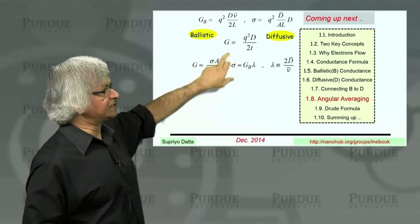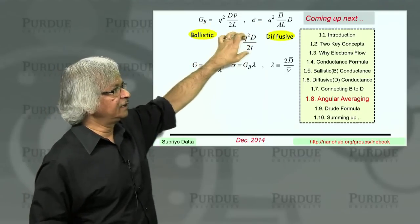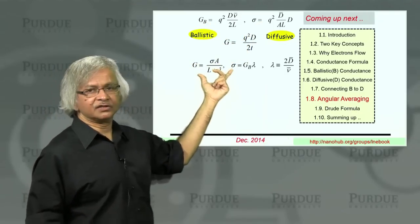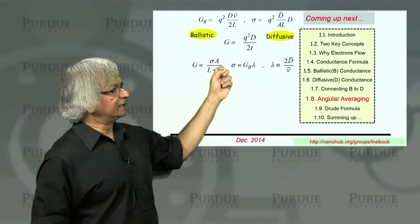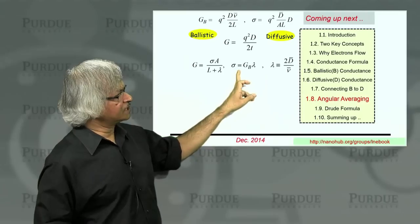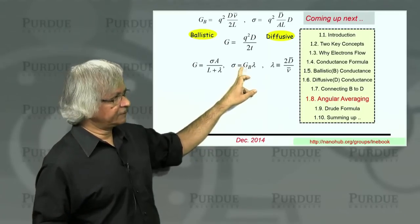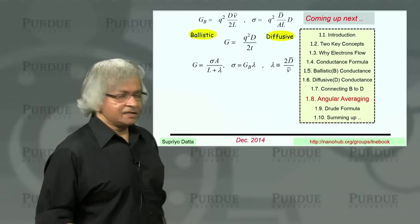So that now brings together all these concepts that we talked about. It puts it all on the same page now. We had this expression for conductance. We looked at the ballistic limit, looked at the diffusive limit, and you could write it all together in this form where this conductivity is given by this GB lambda. I notice I have missed an area here. This should have been sigma A.